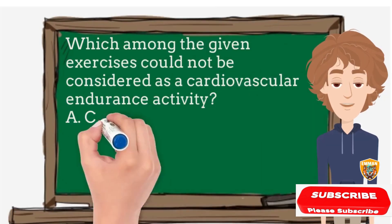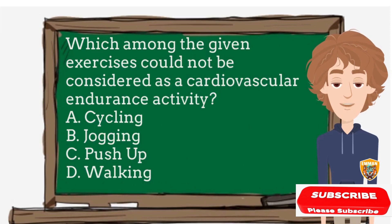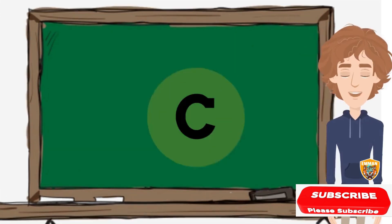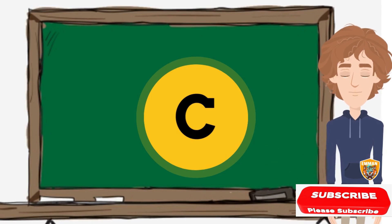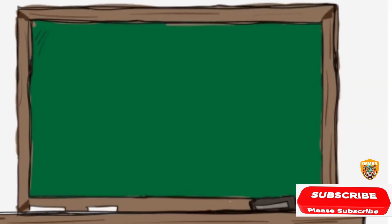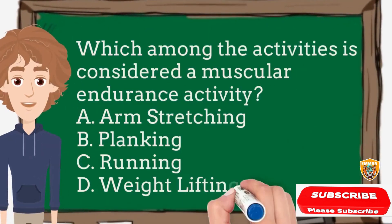For the second question: which among the given exercises could not be considered as a cardiovascular endurance activity? A) cycling, B) jogging, C) push-up, D) walking. The correct answer is letter C, push-up.